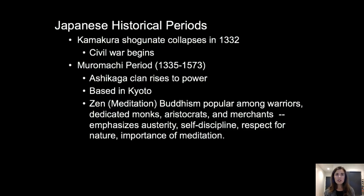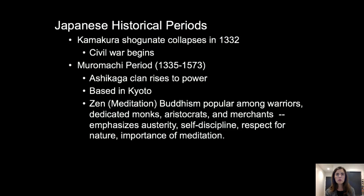The Kamakura Shogunate collapses in 1332, and we move into the Muromachi period, now based in Kyoto, when the Ashikaga clan rises to power. This is when Zen Buddhism also gains in popularity among warriors, monks, aristocrats, and merchants — likely due to its emphasis on austerity, self-discipline, respect for nature, and the importance of meditation.